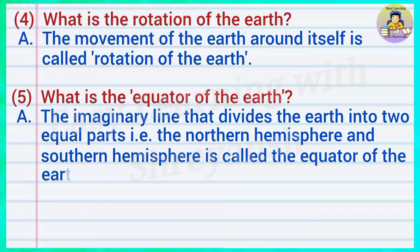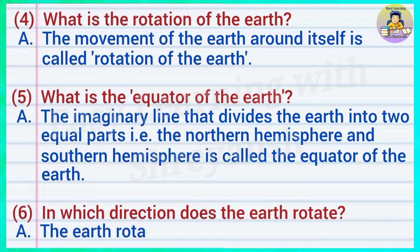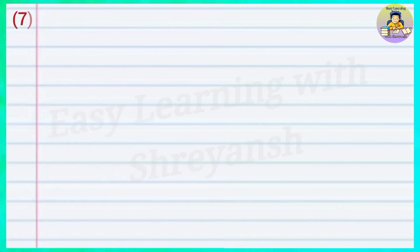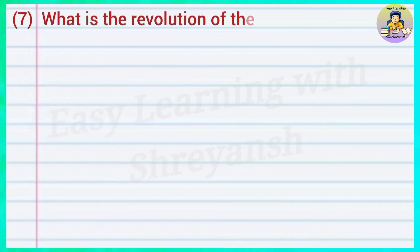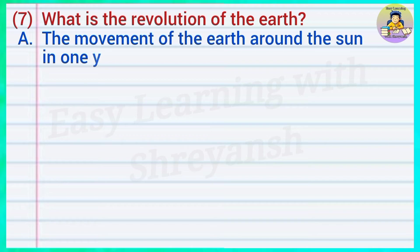Six — in which direction does the earth rotate? Answer: The earth rotates from west to east. Seven — what is the revolution of the earth? Answer: The movement of the earth around the sun in one year is called the revolution of the earth.